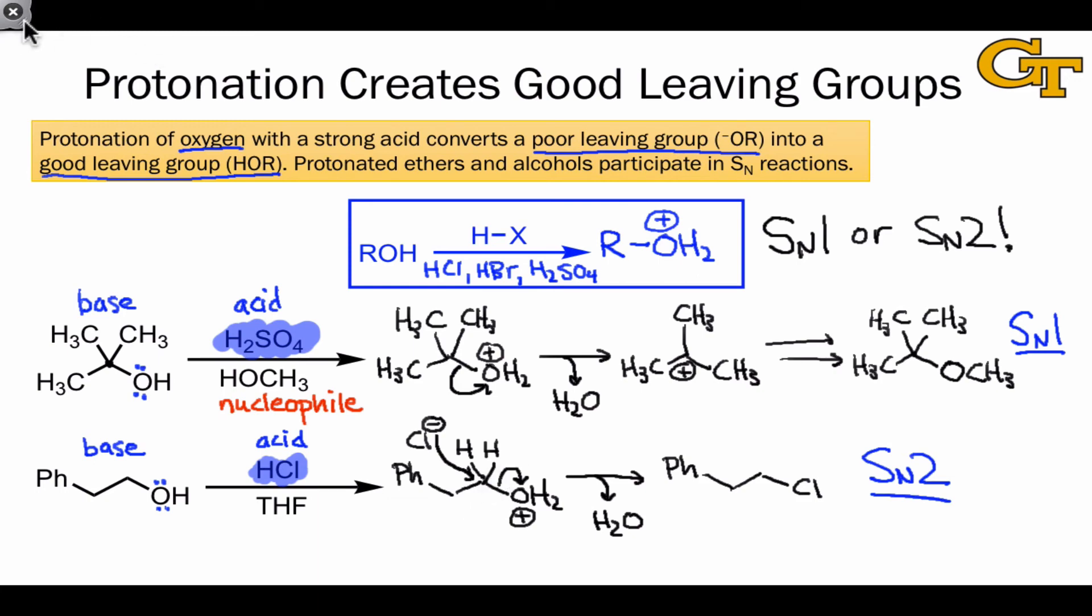One thing you may wonder about is the sulfate anion, or more correctly, the bisulfate anion, HSO4-, in the top case. Why doesn't this coordinate to the carbocation rather than the neutral molecule, methanol? It seems like sulfate ought to be a better nucleophile than methanol due to its negative charge. In fact, because of the massive resonance stabilization enjoyed by this anion, it's non-nucleophilic.